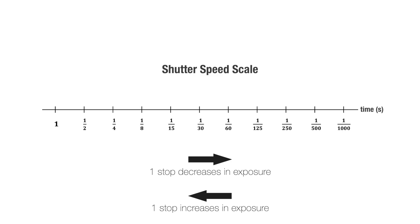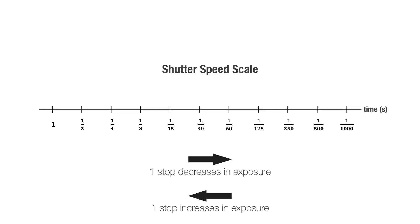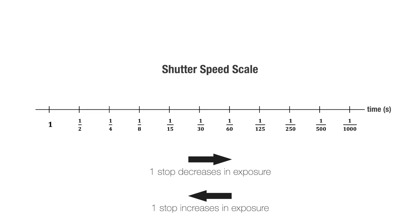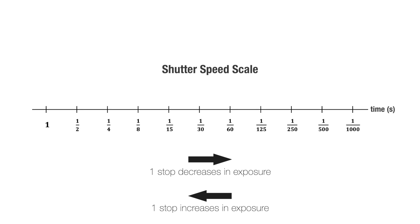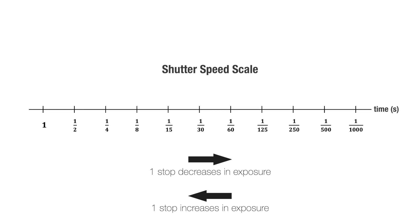This diagram shows how shutter speed changes as light increases or decreases by a stop. Remember, all you have to do is double the shutter to increase by a stop and halve it to decrease by a stop.